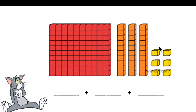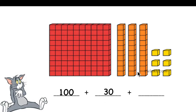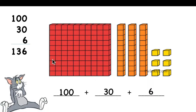One more practice. We're going to do expanded form — we will add hundreds, tens, and ones separately. We have one hundred block. How many tens do we have? Three. Three tens equals thirty. How many ones do we have? Six. Now put the numbers together — copy 1, then 3, then 6. One hundred thirty six — that's the standard number.